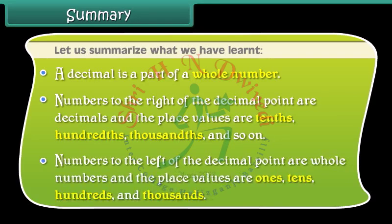Numbers to the left of the decimal points are whole numbers and the place values are ones, tens, hundreds and thousands.